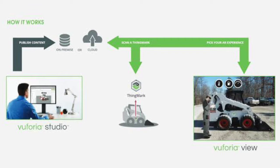This is how a ThingMark works basically. It's kind of a QR code scanning which directs us to the respective experience which we want to fetch, and we are able to view it using the Euphoria View application.